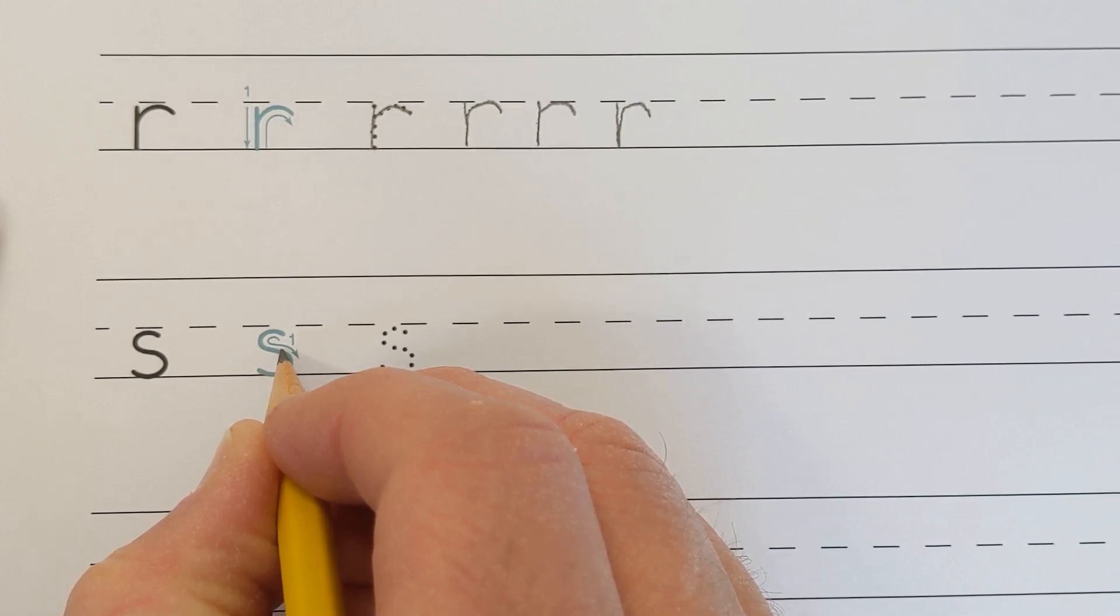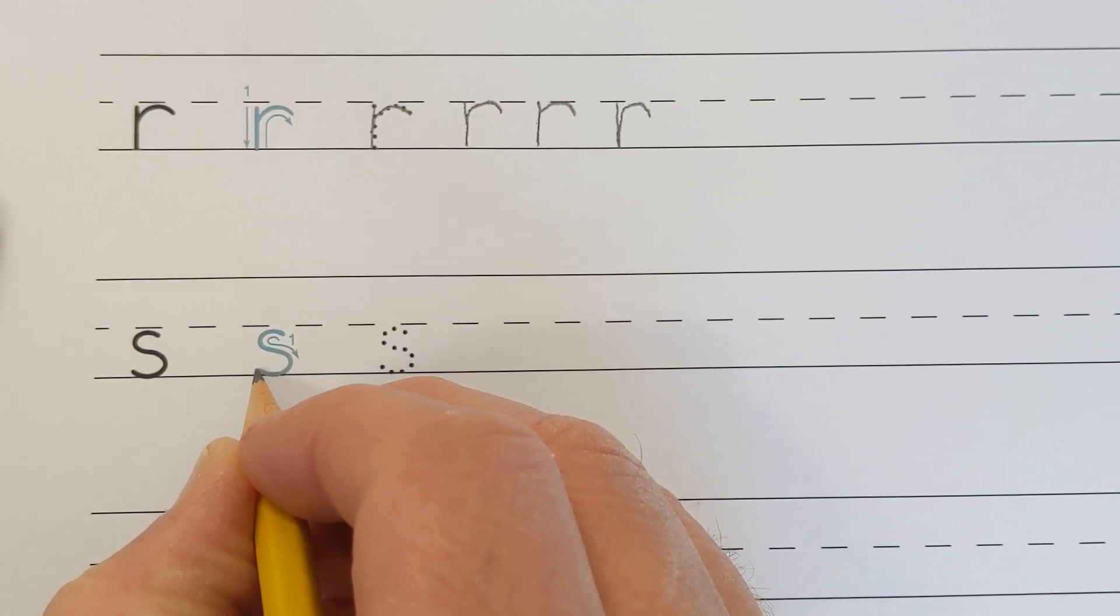Then, without taking your pencil off the paper, continue by making a half circle underneath that goes to the right.